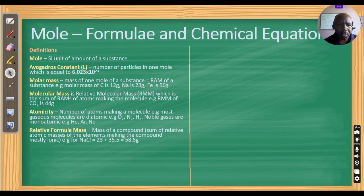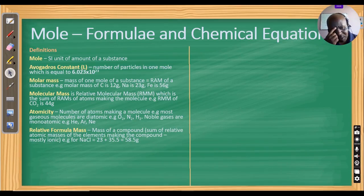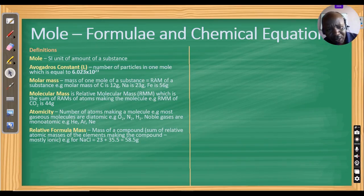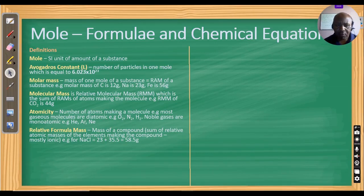Relative formula mass is the mass of a compound — the sum of RAMs of the different elements making a compound. For example, sodium chloride NaCl is made up of sodium and chlorine. So the relative formula mass for NaCl is 23 + 35.5 = 58.5.